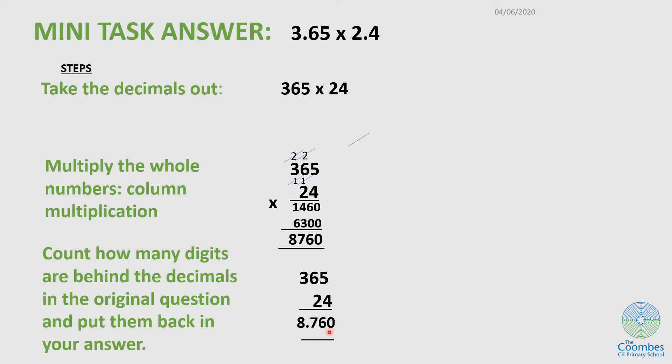Starting from here, 1, 2, and 3. So my decimal point should be 8.760.